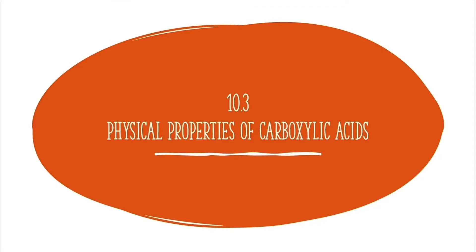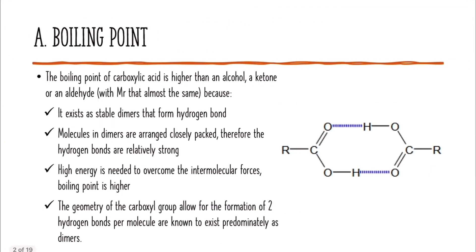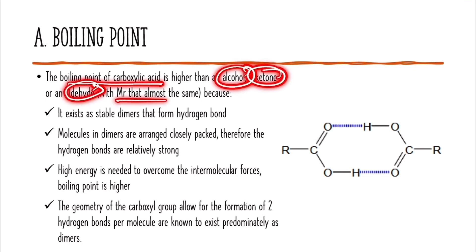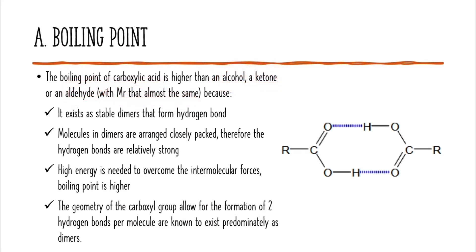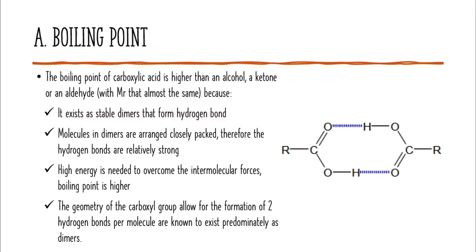Physical properties of carboxylic acid. Let's take a look at the first one: the boiling point of carboxylic acid. The boiling point of carboxylic acid is higher than alcohol, ketone, or aldehyde with similar molecular weight. This is because carboxylic acid can exist as a stable dimer that forms hydrogen bonds between two carboxylic acid molecules.